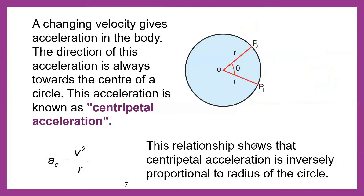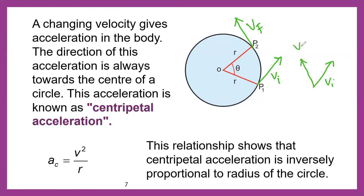If VI is the initial velocity at point P1 and VF is the final velocity at point P2, I can combine both these velocities. VI is acting in one direction and VF is acting in another direction. The change in both velocities is acting toward the center. So if the change in velocity is acting toward the center, that means the acceleration of the object is also acting toward the center.